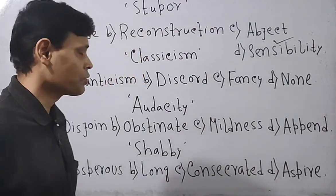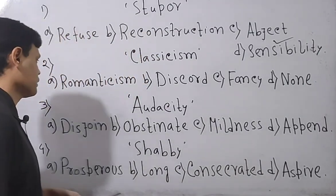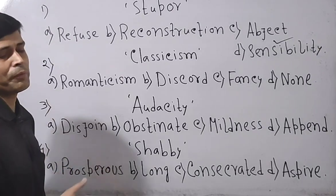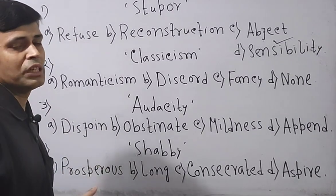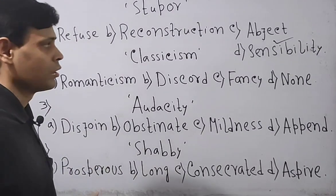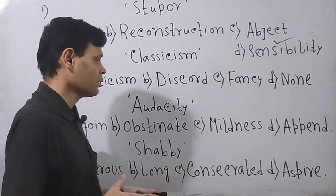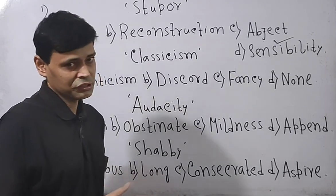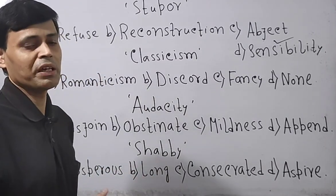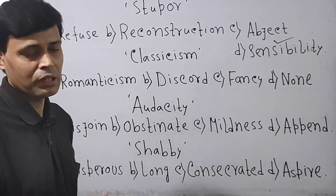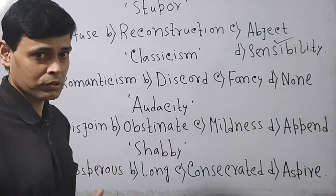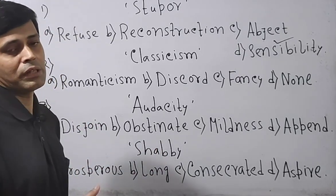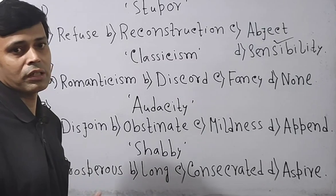The opposite of classicism is romanticism, because their features are different from each other. Both classicism and romanticism are ages of English literature, but their features were different from each other, so the opposite is romanticism.